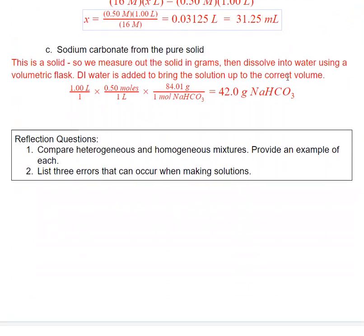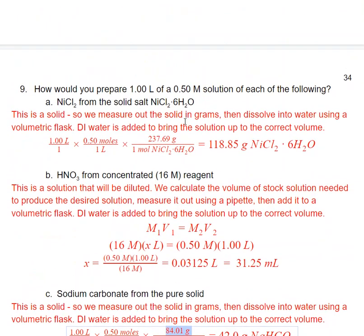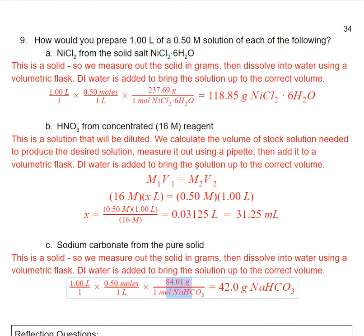In C, we have another solid. We need to weigh this out in grams. I'm making one liter of this concentration. That'll give me moles of my solid. Then I convert moles into grams. All of these solutions require half a mole of whatever compound. The question is, how do we get that half mole? Do we measure it as a solid or do we measure it as a volume if it's a solution?